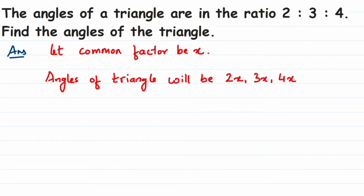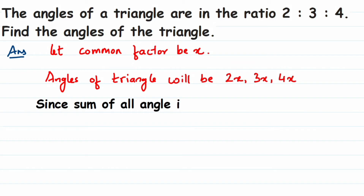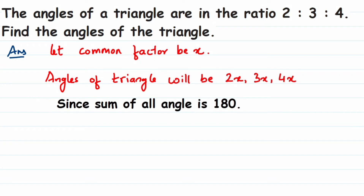Now we're going to apply the angle sum property — that is, the sum of all angles is equal to 180°. Since the sum of all angles is 180°, we add up all the angles: 2X + 3X + 4X = 180°. Adding them up, we get 9X = 180°.